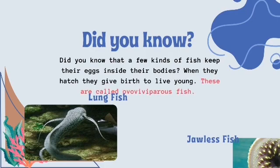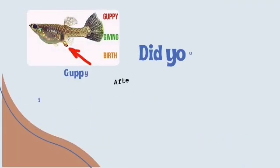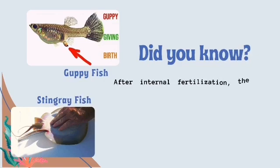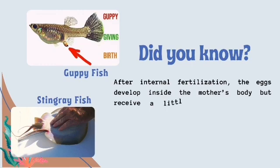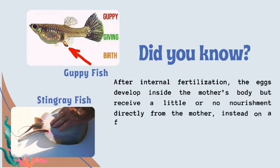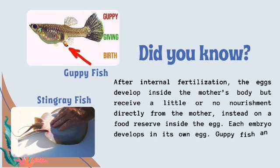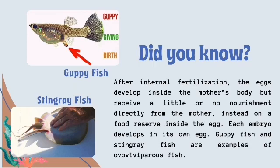These are called ovoviviparous fish. After internal fertilization, the eggs develop inside the mother's body, but receive little or no nourishment directly from the mother, instead relying on a food reserve inside the egg. Each embryo develops in its own egg. Guppy fish and stingray fish are examples of ovoviviparous fish.